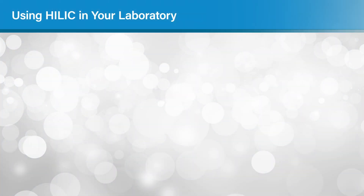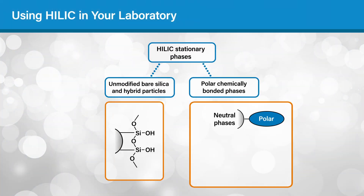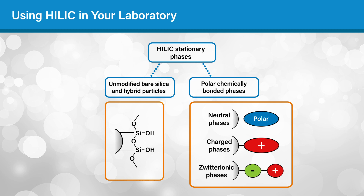If you're looking to use HILIC in your laboratory, you'll find that there are many HILIC column chemistries to choose from, as the chemistry of a HILIC column plays a critical role in analyte retention and selectivity. Shown here are HILIC stationary phases separated into two groups. The first group has a surface that's unmodified bare silica or hybrid particles. These chemistries have good retention for polar basic compounds because the surface silanols can be deprotonated and act as cation exchangers.